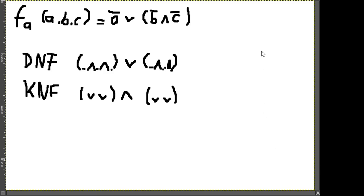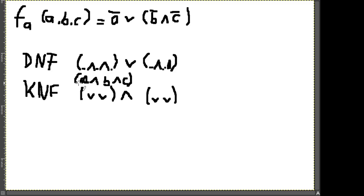Bei der kanonischen Form müssen wir für DNF und KNF in den Termen alle unsere Ausgangsvariablen drin haben. Das heißt, wenn ich A, B und C habe, muss auch ein einzelner Term aus irgendwie A und B und C bestehen – manchmal mit Negationen. Wenn vorne nur ein A steht, fehlen uns noch B und C. Deshalb ist das keine kanonische DNF, weil nicht alle Eingangsvariablen in jedem Term berücksichtigt sind.